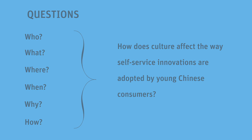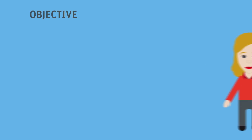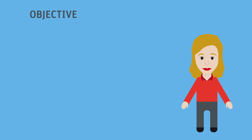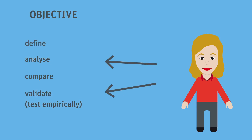Anna has to consider the objective of her paper. The objective of an academic paper can be to define, analyze, compare, validate, or predict data or a specific problem.